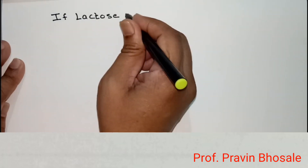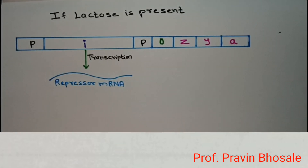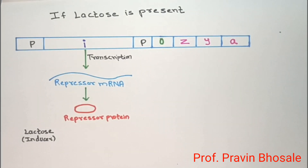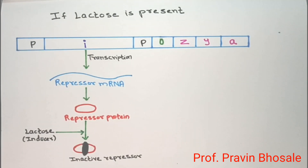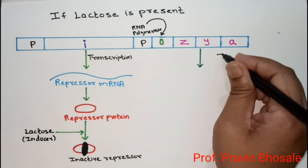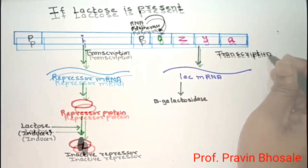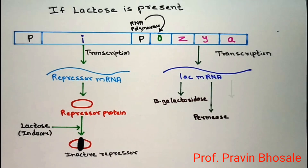If lactose is present, the regulatory genes by transcription produce repressor mRNA, which produces repressor protein. However, lactose acts as an inducer — it inactivates the repressor protein so it cannot bind to the operator region. RNA polymerase then binds to the operator, the lac operon is on, and structural genes produce lac mRNA, which by translation produces beta-galactosidase, lactose permease, and transacetylase.